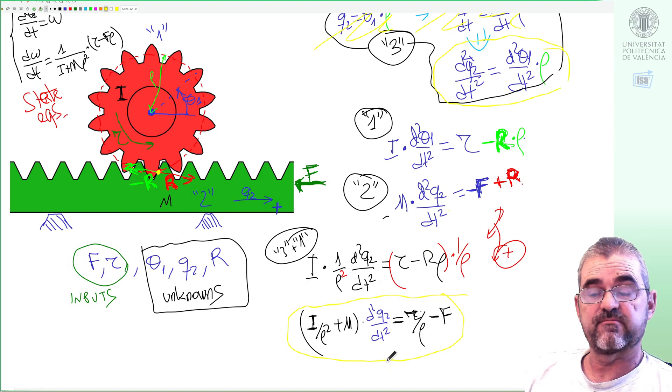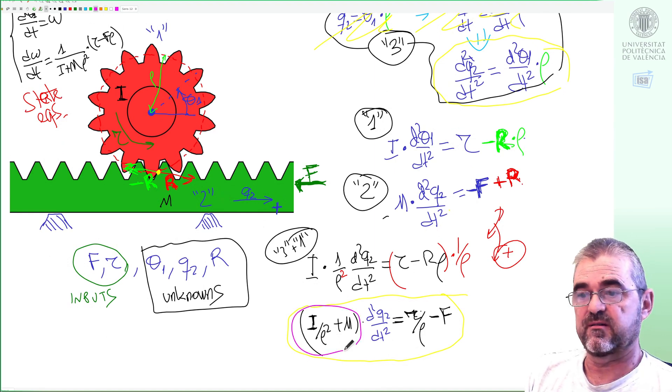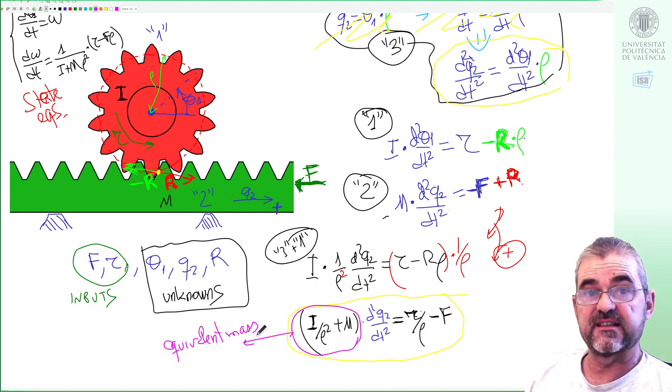I will get this final equation in which only the acceleration of the green object is the unknown. So this thing here will be the so-called equivalent mass because it's what multiplies to the linear acceleration of the green body.